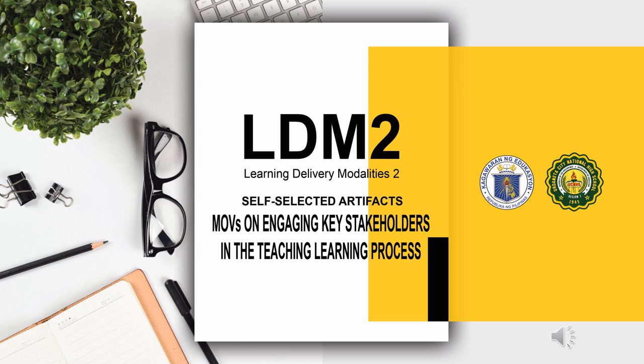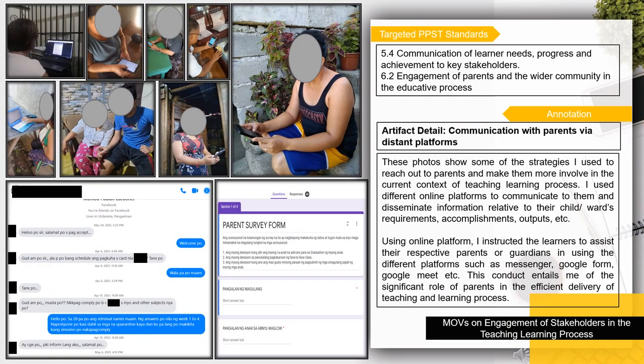The following are the artifacts on means of verification on engaging key stakeholders in the teaching-learning process. The targeted PPST standards are 5.4 Communication of learner needs, progress, and achievement to key stakeholders, and 6.2 Engagement of parents and the wider community in the educative process. These photos show some of the strategies I used to reach out to parents and make them more involved in the current context of the teaching-learning process, using different online platforms to communicate and disseminate information relative to their child's requirements, accomplishments, and outputs.